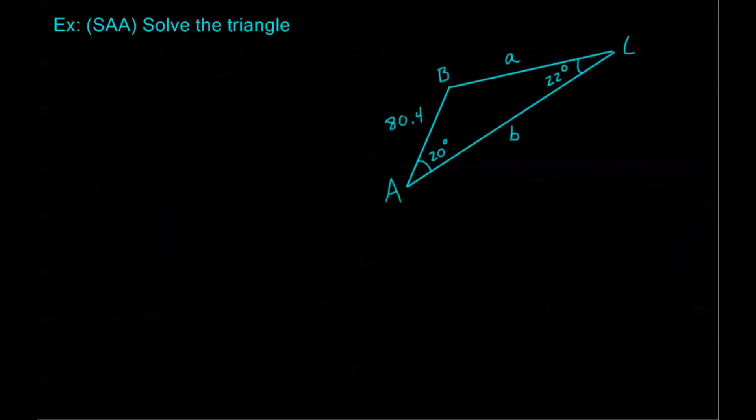So here we're just given a diagram of a triangle, and we want to solve the triangle. Now remember, whenever you're asked to solve a triangle, that means to find all pieces of information that are not given. So here, that's going to be angle B, side a, and side b. So first, angle B is always going to be the easiest one to find when we have two angles.